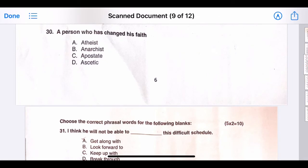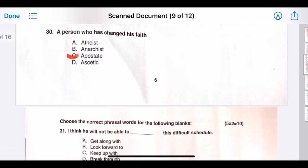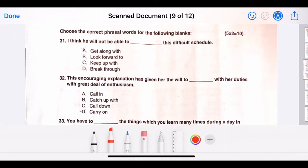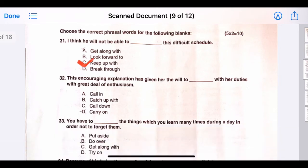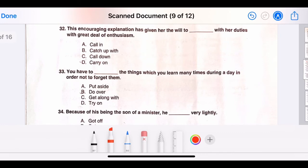Thirty, a person who has seen his faith. The correct answer is option C, apostate. Choose the correct phrase or words for the following blanks. The first question is, I think he will not be able to blank this difficult schedule. The correct answer is option C, keep up with. Thirty-two, this encouraging explanation has given her the will to blank with the duties with great deal of enthusiasm. The correct answer is option D, carry on.